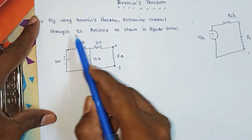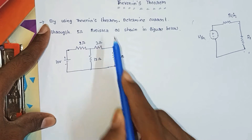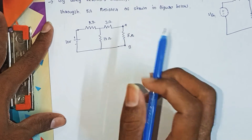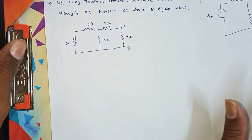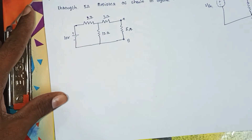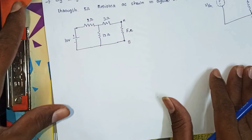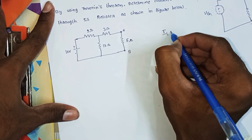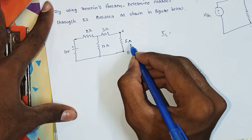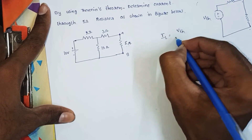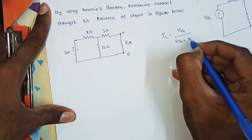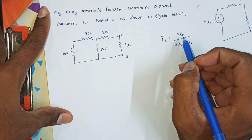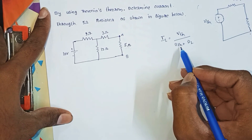By using Thevenin's theorem, we determine the current through the 5-ohm resistor as shown in the figure. The current in load resistance IL equals VTH divided by (RTH plus RL), where RL is the load resistor, VTH is the Thevenin voltage, and RTH is the Thevenin equivalent resistance.